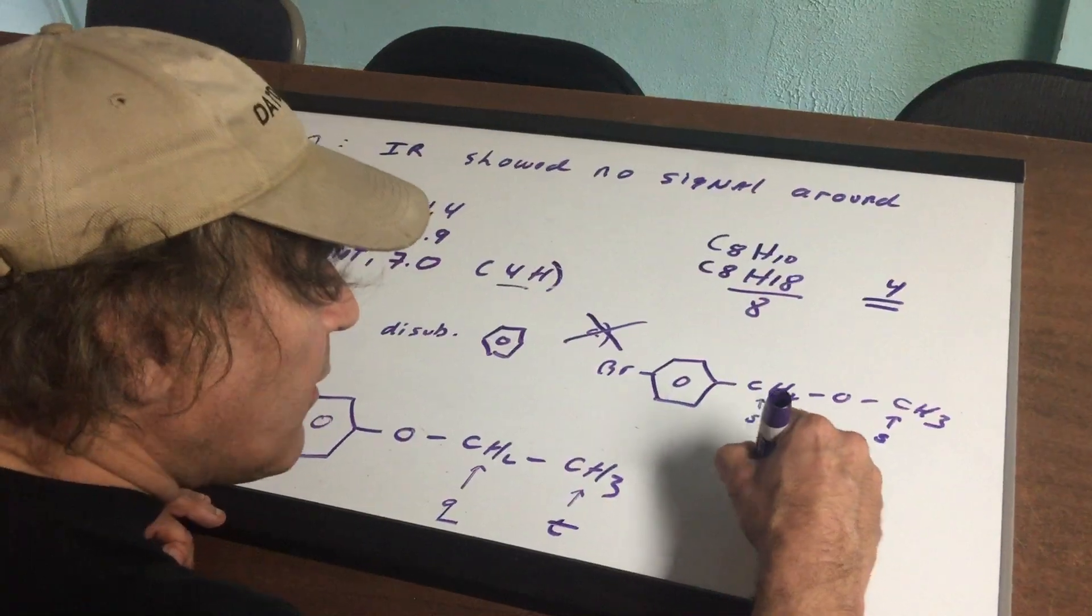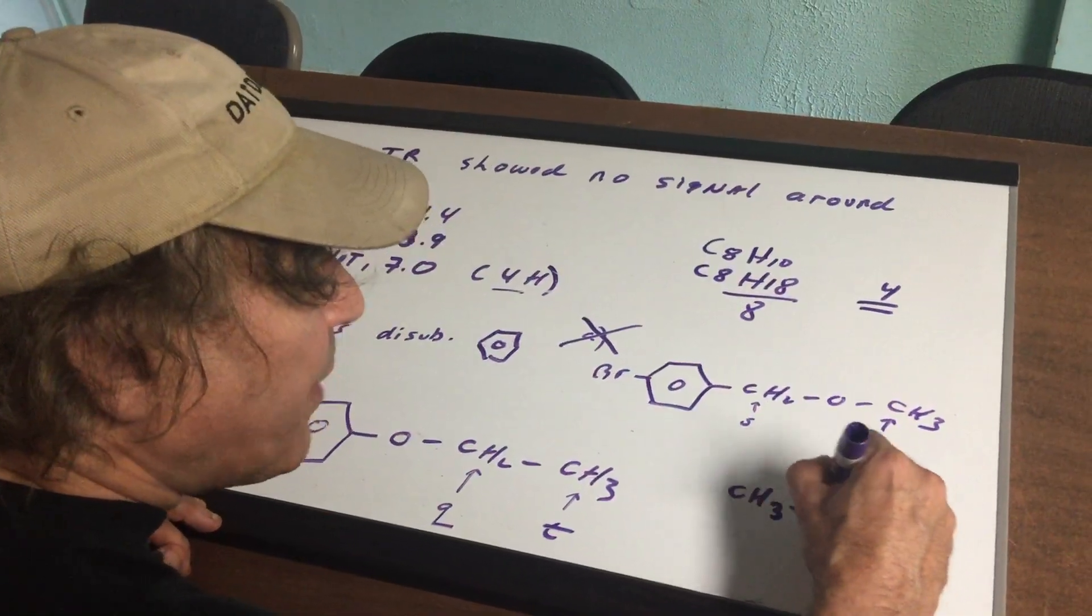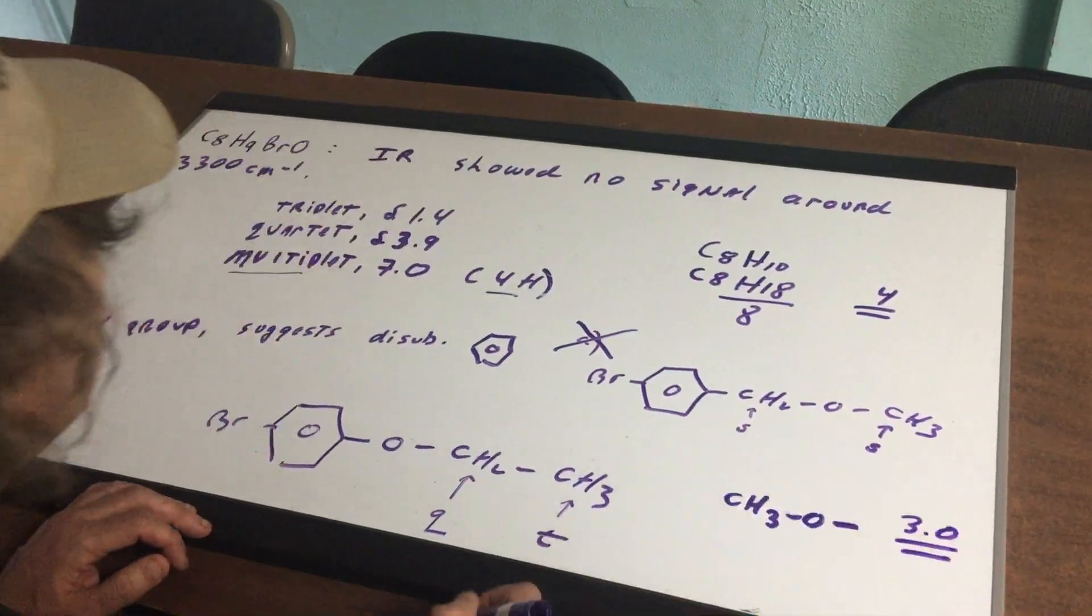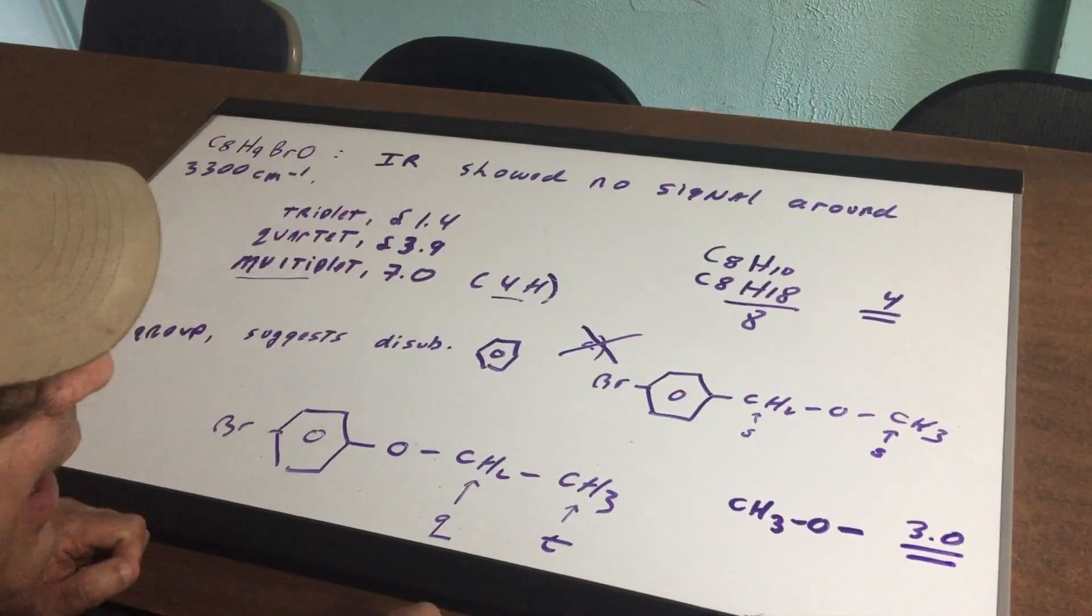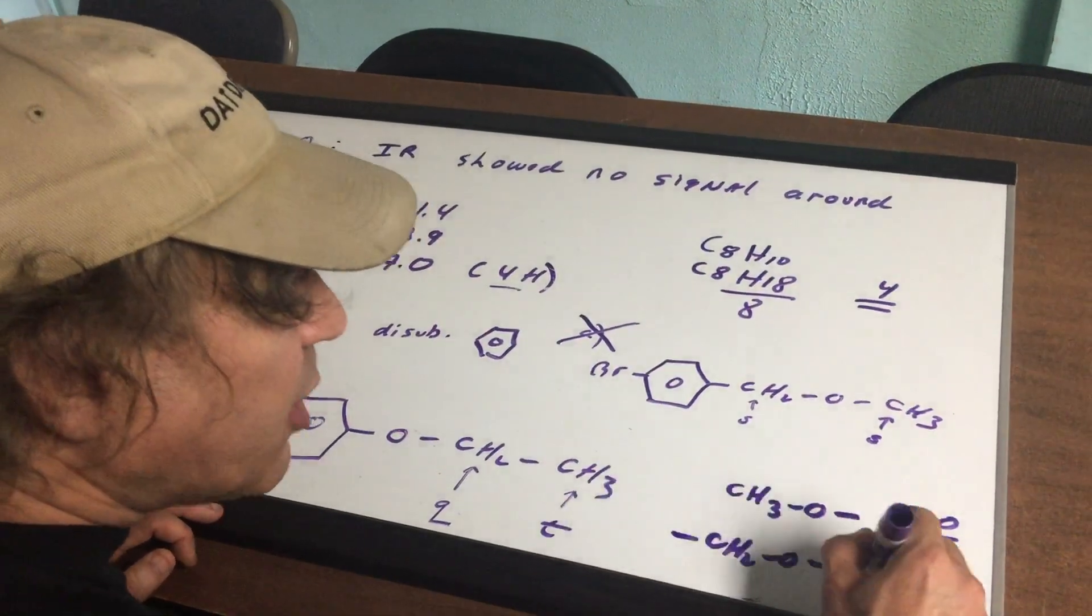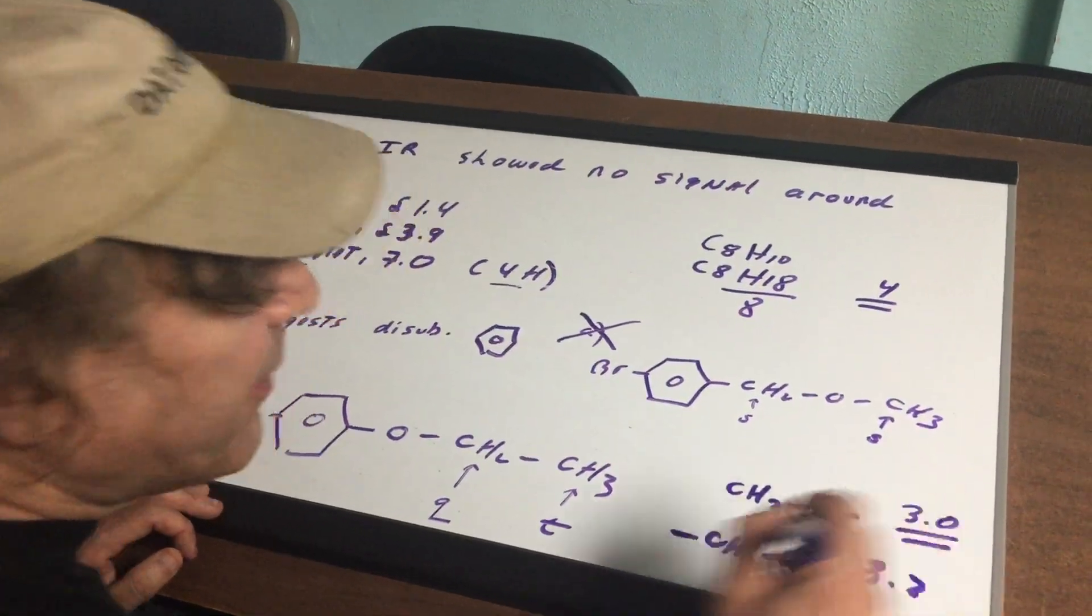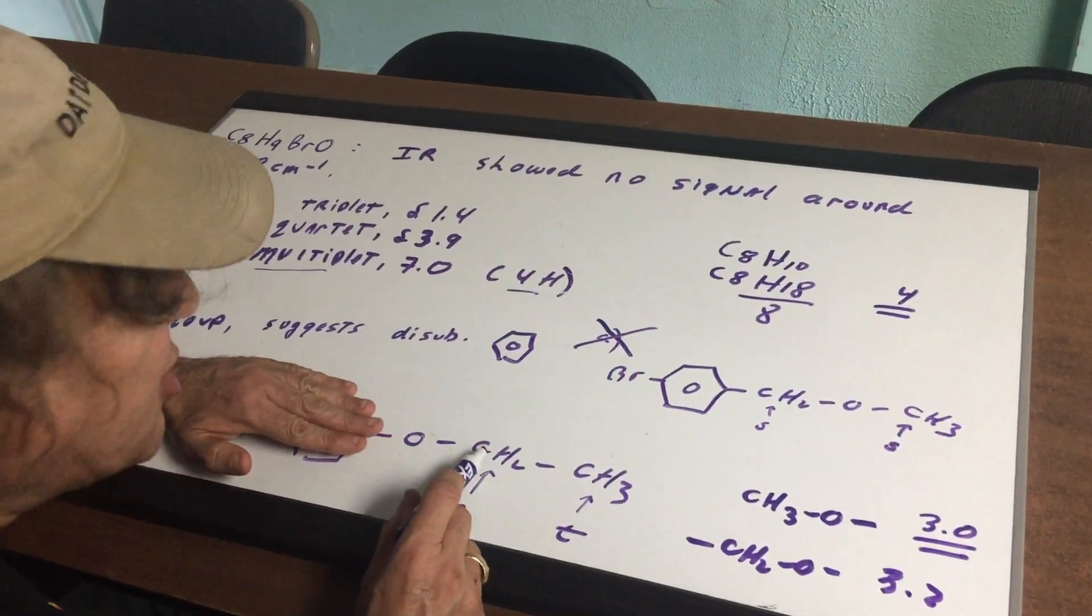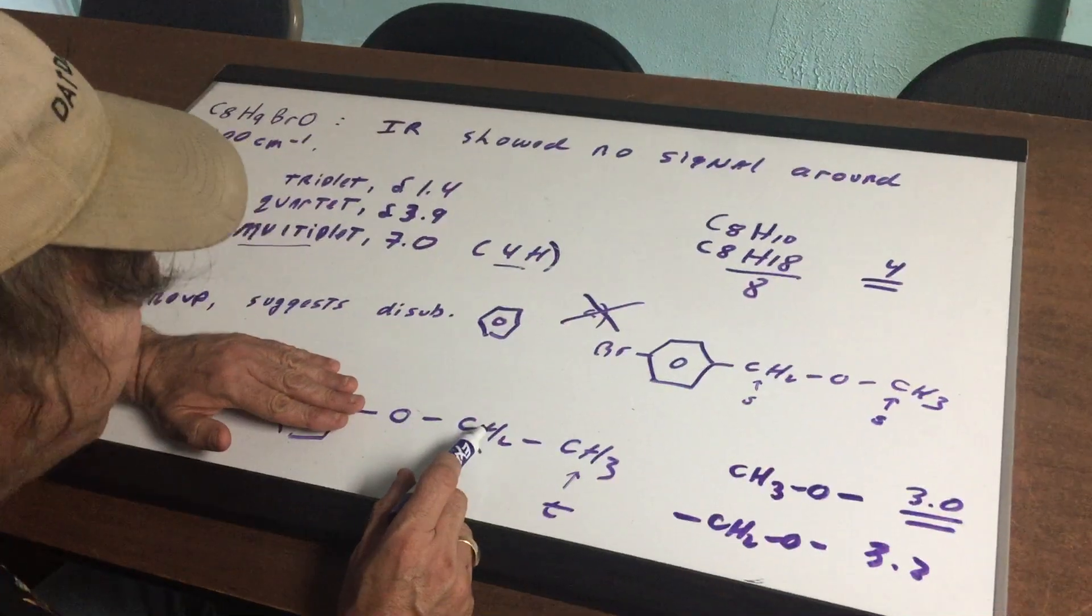Now, I'm going to show you a nice trick. A CH3 group next to an O, I teach all my students, comes in around delta 3 on the tau scale. If it was a CH2 group next to an O, it would be a little higher, maybe around 3.2. So if this wasn't here, I would expect this quartet to come in around 3.2.